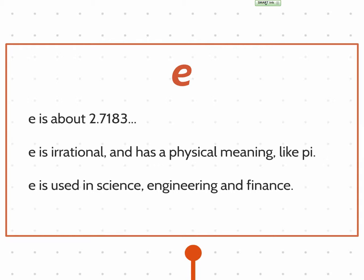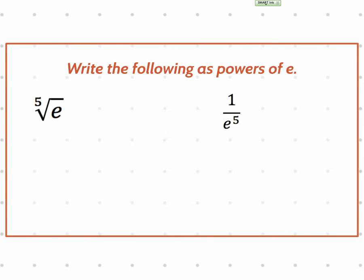We're going to go over a few examples. It starts by saying write the following as powers of e. We're first going to start off with the fifth root of e. This was actually from section C. How do I turn this root into a power? It's one-fifth because there's an invisible one right there. So e to the one-fifth. The base is e. You've got a power.